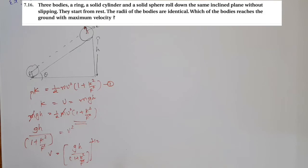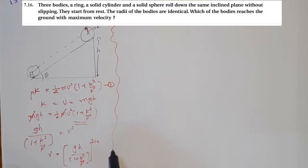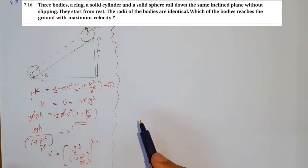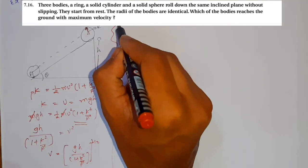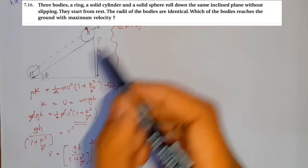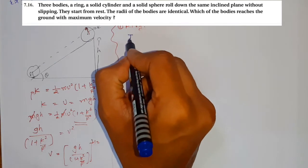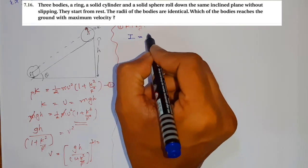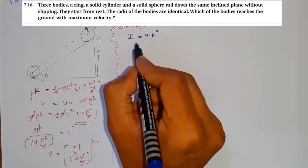Now we define the velocity for each body. First, let's talk about the ring. The moment of inertia of a ring is I = mr².